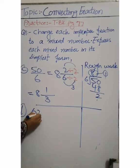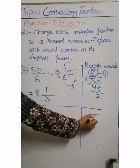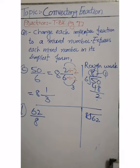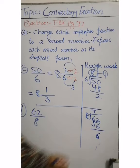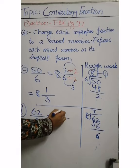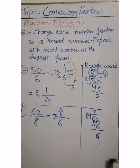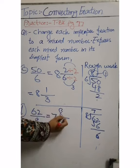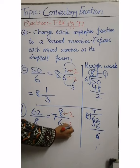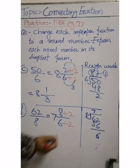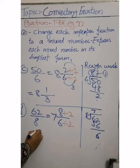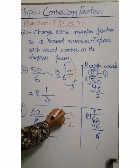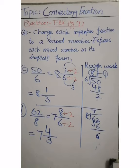Part d: 62 by 8. We put 62 inside and divide it by 8. 8 times 8 is 64, which is too large, so 8 goes 7 times to give 56, and the remainder is 6. So 7 whole 6 by 8 is the answer, but this is not in simplified form. We simplify by dividing both numbers by the same factor; 2 divides both 6 and 8, giving us 7 whole 4 by 3 as the final answer.